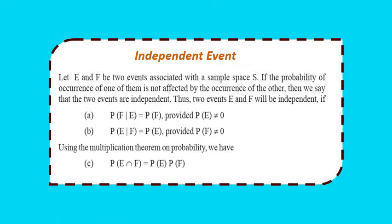Independent events: Let E and F be two events associated with the sample space S. If the probability of occurrence of one of the events is not affected by the occurrence of the other event, then we say the two events are independent.